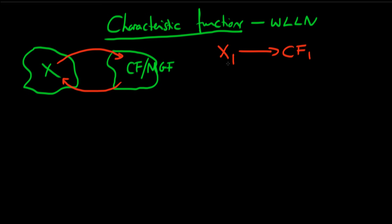So if we think about an example where random variable X1 has a characteristic function CF1, and variable X2 has a characteristic function CF2, you can think about this for every different type of random variable — there is an associated characteristic function. It's a one-to-one mapping, and this mapping also holds in the reverse direction: for every particular characteristic function there is only one type of random variable with an associated probability density that can satisfy it.